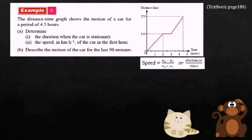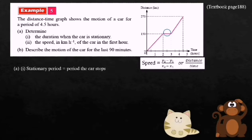Example 5: The distance-time graph shows the motion of a car for a period of 4.5 hours. Determine the duration when the car is stationary. The car is stationary in this section, calculated as 3 minus 2. So the stationary period equals 1 hour.